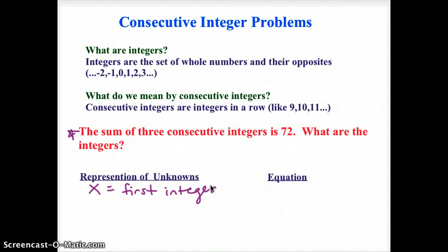I don't know what the second integer is either. I could give it another variable like y, but if I can think of it in terms of x, that will be better. So I know that these are integers in the row, so the second one should be one more than the first one. So I'm going to call x plus 1 the second integer.